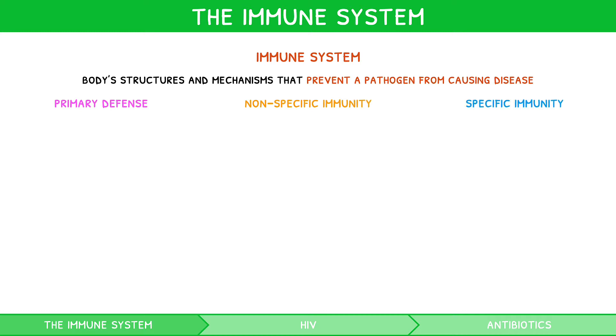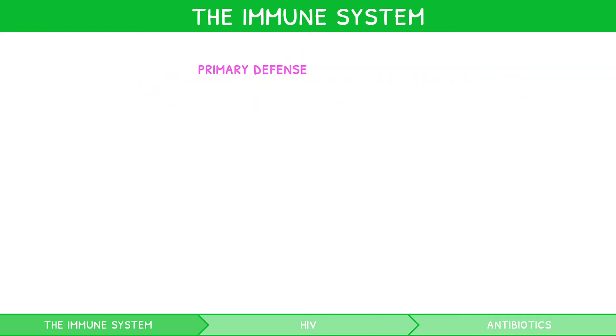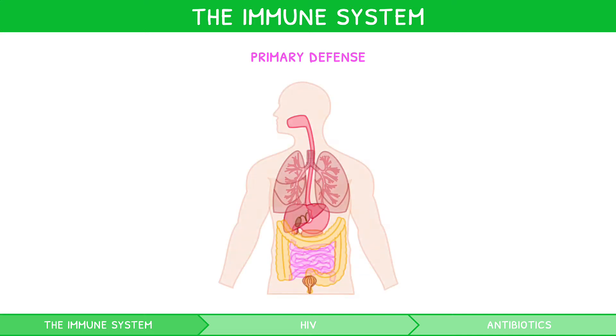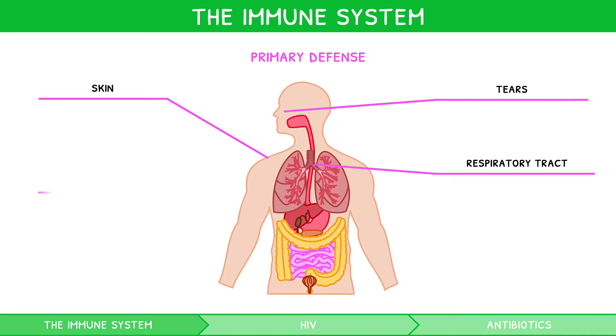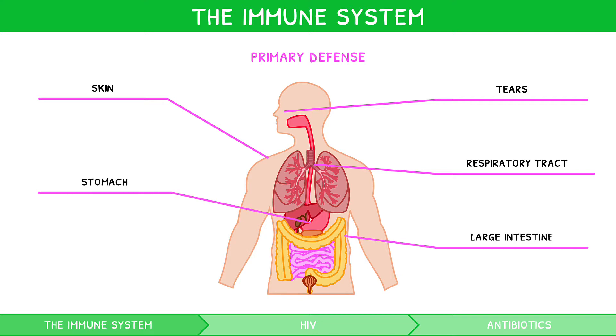The key structures that comprise the primary defence system are the skin, tears, the respiratory tract, the stomach, the large intestine, and the bladder.